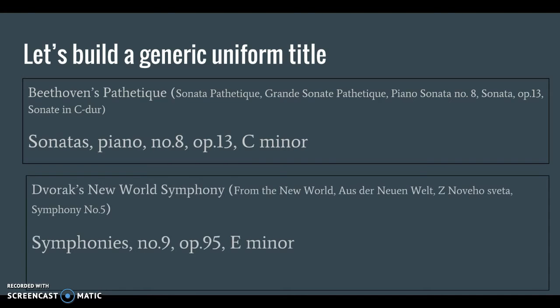Dvořák's New World Symphony is a similar piece. We call it the New World Symphony, but it has a similar name in many other languages. Librarians have given it the uniform title Symphonies, No. 9, Op. 95, E minor.